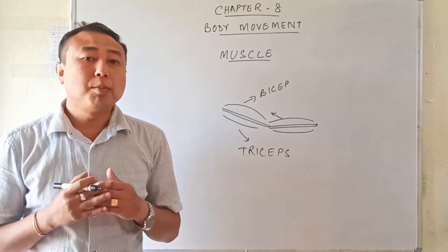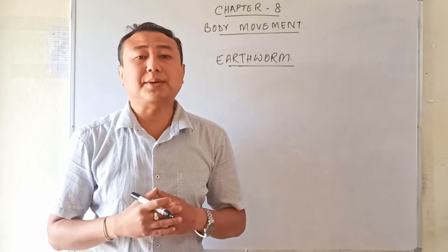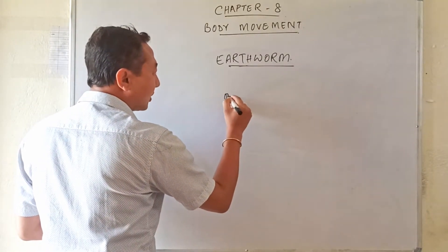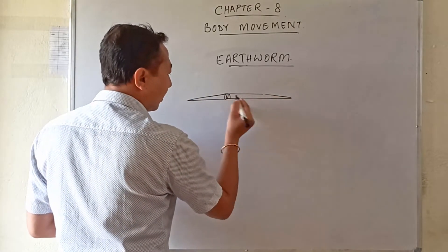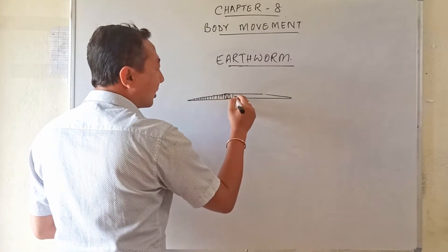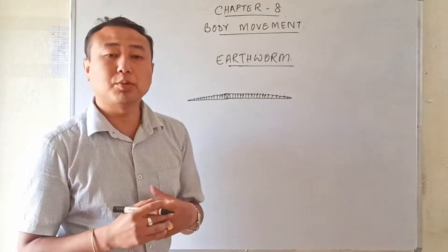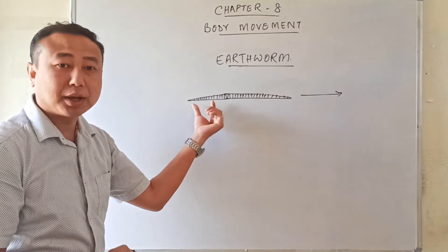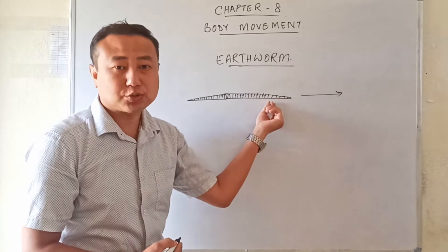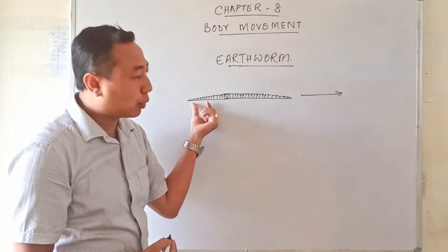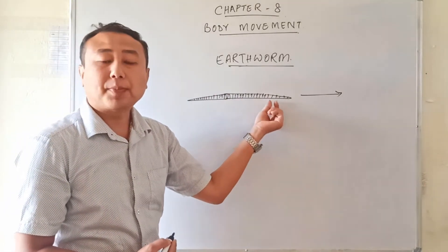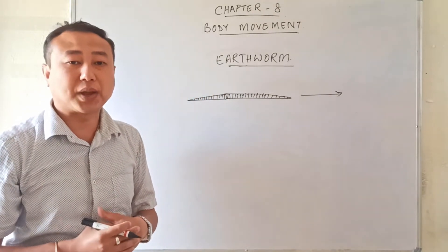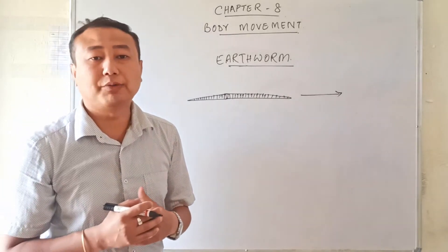Now let us see how movement is caused in different types of animals. First let us take the earthworm. When we observe the structure of the earthworm, we can see rings of muscles. Their body is made up of rings of muscles. The contraction and relaxation of these muscles helps in the movement of their body. When the earthworm moves forward, the back portion remains fixed while the upper portion contracts, pulling the back side forward. In this way the rings of muscles help the earthworm move forward.